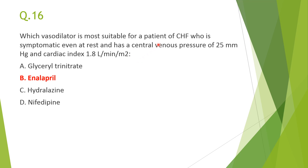Next: which vasodilator is most suitable for a CHF patient symptomatic at rest with central venous pressure of 25 mmHg and cardiac index 1.8 L/min/m²? This indicates NYHA grade 4 CHF with highly raised preload. Hydralazine and nifedipine are arterial dilators and not preferred. Among glyceryl trinitrate and enalapril, both are combined dilators, but enalapril is most suitable as it causes preload and afterload reduction and reverses pathological remodeling.